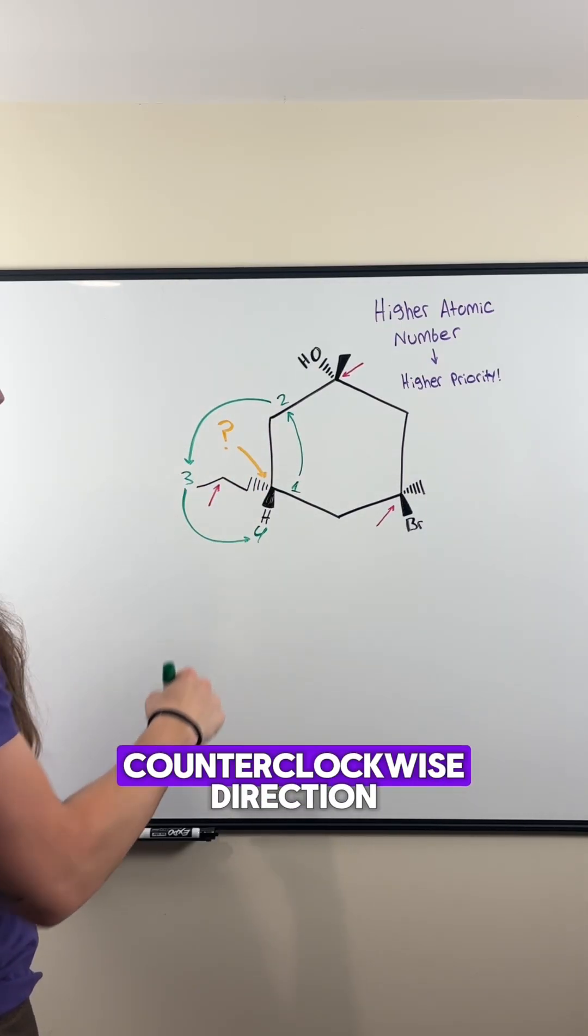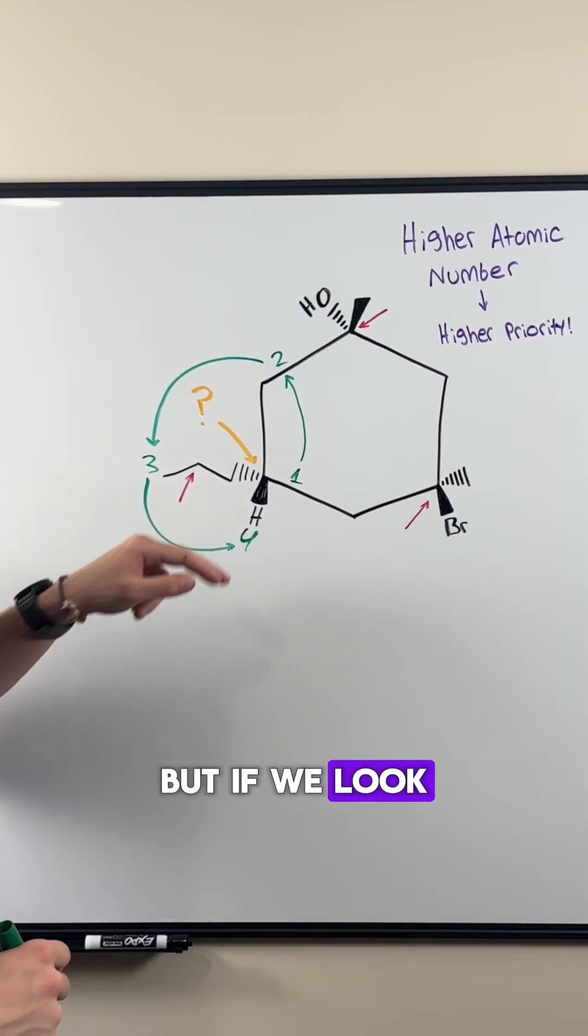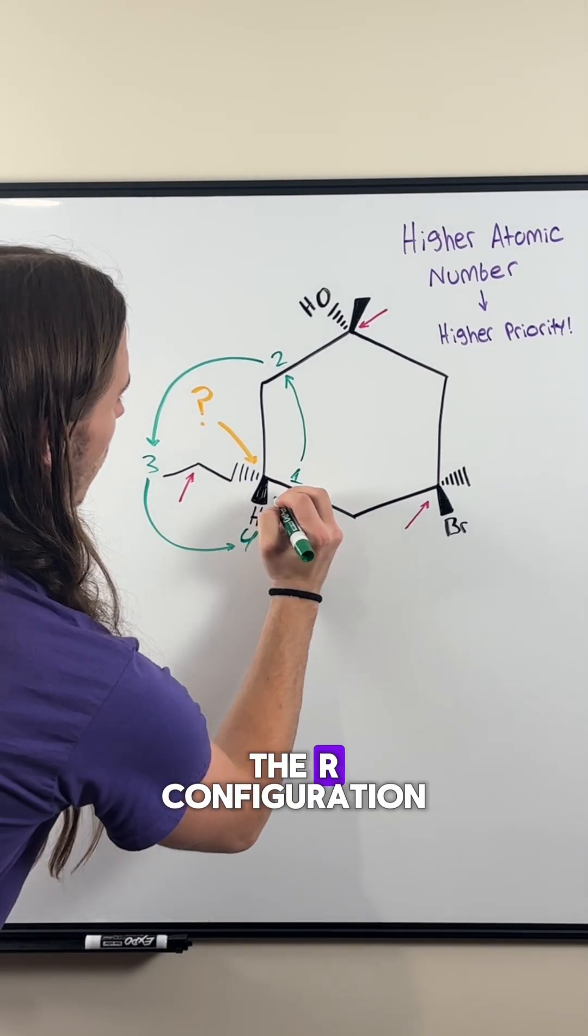We can see that we're moving in the counterclockwise direction, which would typically mean the S configuration, but if we look at our lowest priority, it is wedged, meaning we have to flip it so it's in the R configuration.